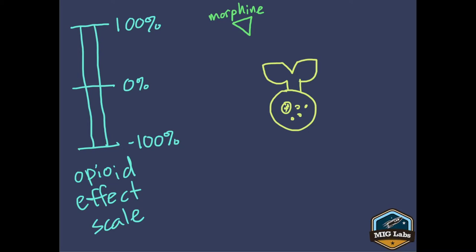The antagonists are part of the same class as the agonists. This different-colored triangle represents naloxone — Narcan. An antagonist can also bind to the receptor because it has the same chemical structure; it's still technically an opioid. The only difference is that when it binds, it does not cause the release of those chemicals that produce those opioid effects.